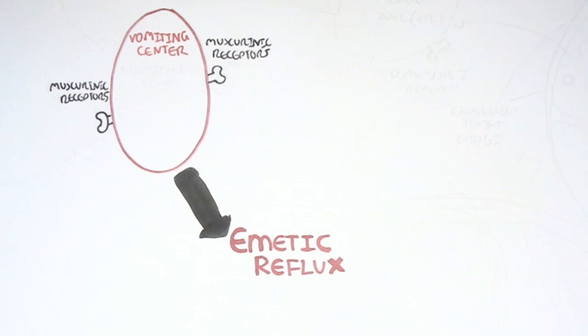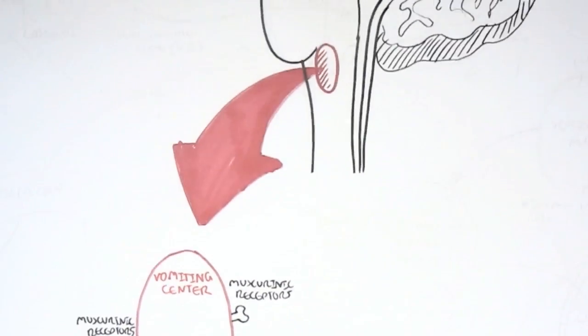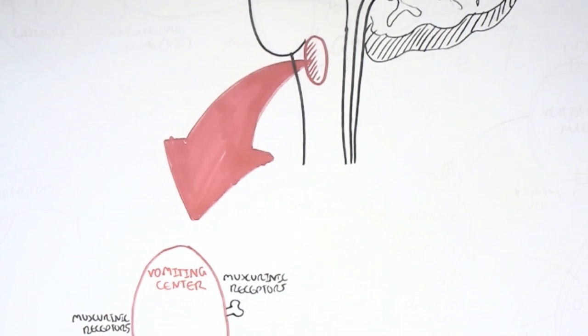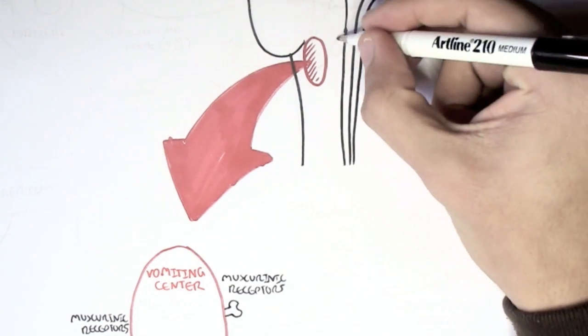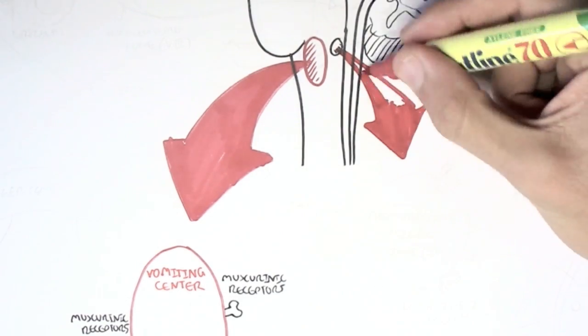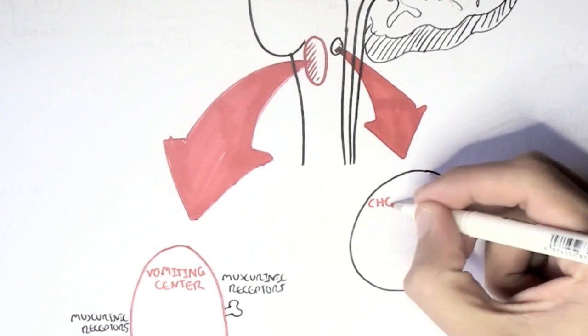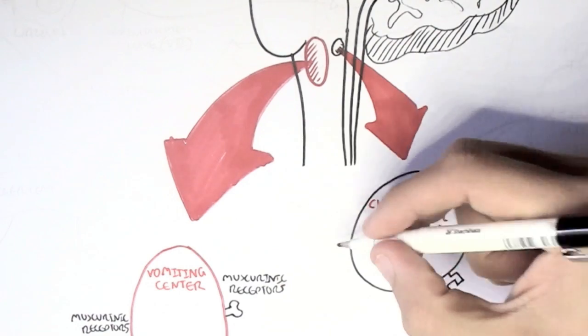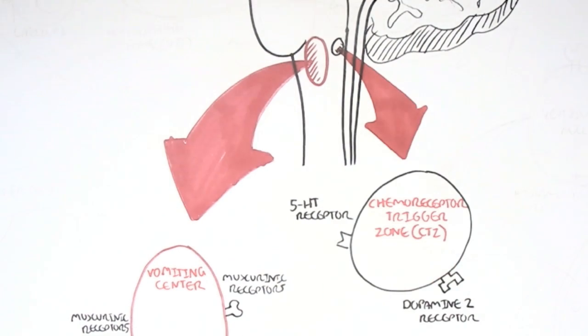Now, there are several ways that the vomiting center itself can be stimulated. One of the main ways is by the chemoreceptor trigger zone, which is located in the medulla here. The chemoreceptor trigger zone has two main types of receptors. It has the dopamine type 2 receptor and the 5-hydroxytryptamine type 3 receptor.